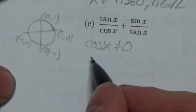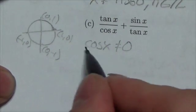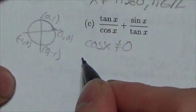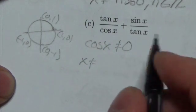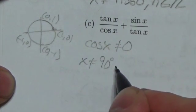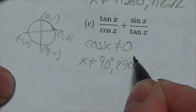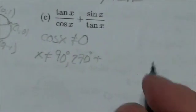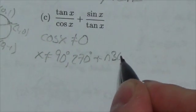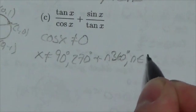So right away here, we know that if we can't let cosine go to zero, that means we cannot let x be 90 degrees or 270 degrees, plus n times 360 degrees, where n is an element of the integers.